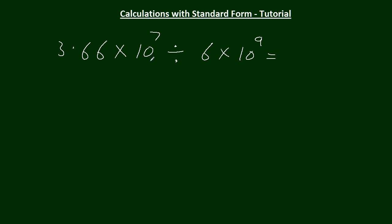This one now: 3.66 times 10 to the 7, divided by 6 times 10 to the 9. Let's do the indices first again. 7 minus 9, it's going to be minus 2, so it's 10 to the minus 2. And this bit here is going to be 3.66 divided by the 6. Well, 6 into 36 there is 6, and 6 into 6, 1. 0.61.